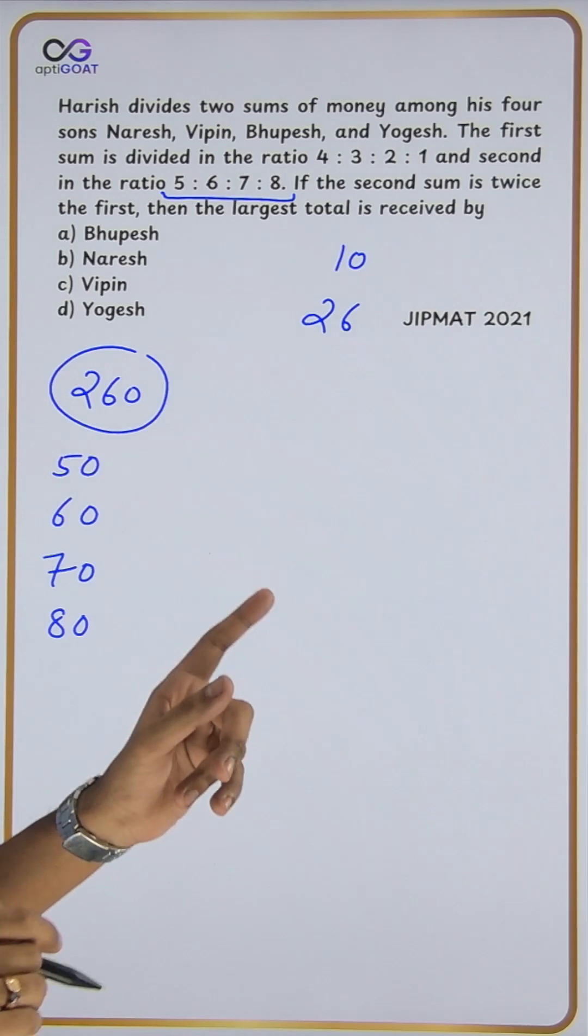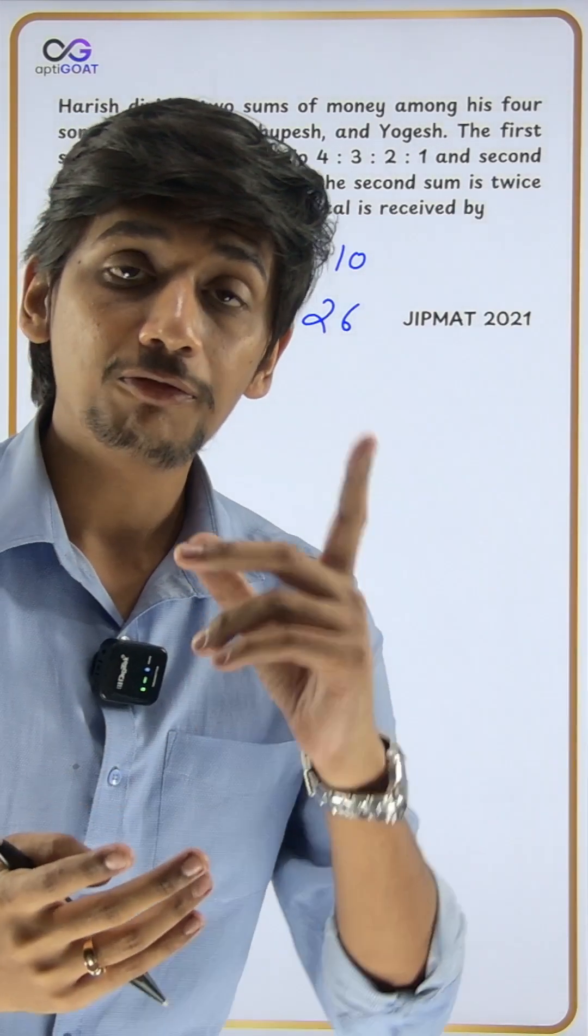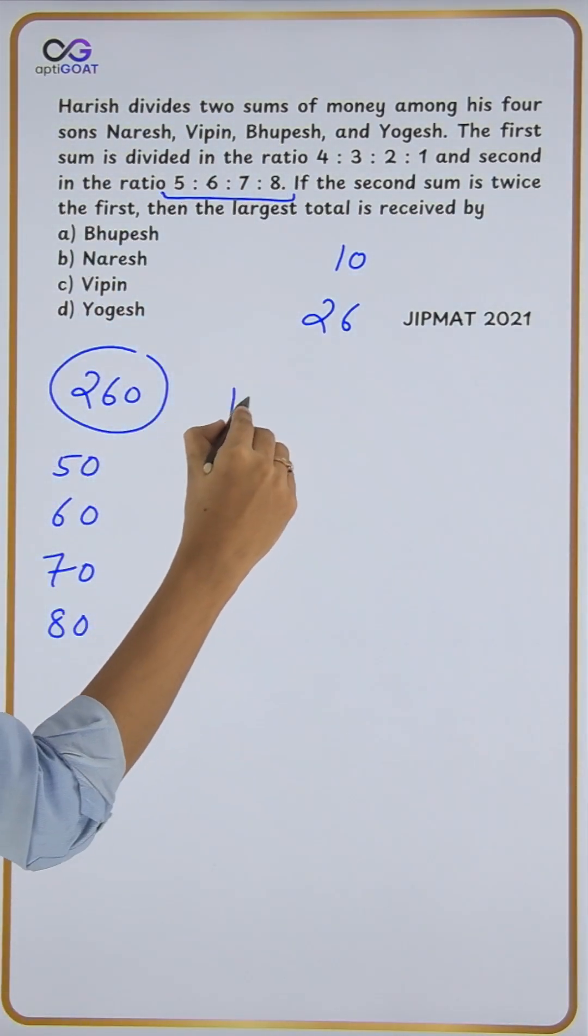If the second sum is 260, what is the first sum? That is half of this, which is 130.